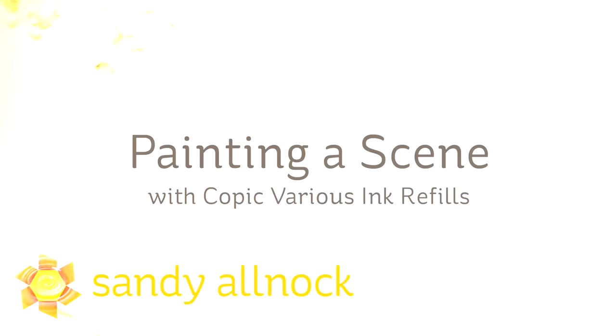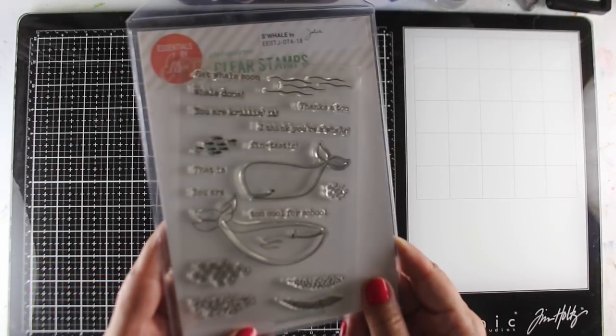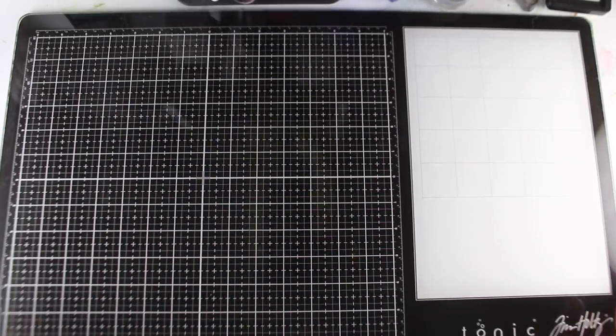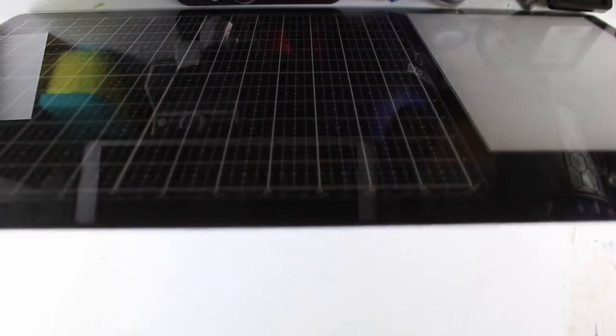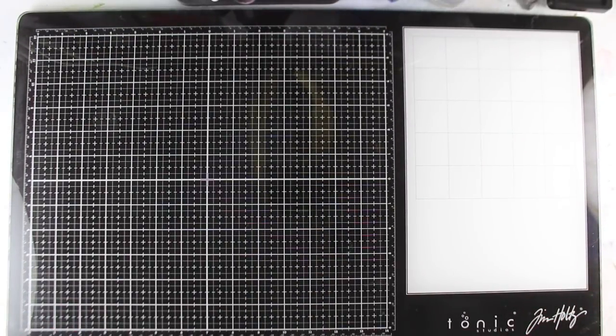Today I'm going to be painting a scene with Copic Various ink refill bottles. It's very similar to what you can do with alcohol inks. I'm going to be using Swale by Ellen Hutson, and I'm also using my Tonic glass mat. I thought I'd lift it up and show you. It's quite heavy, but it's pretty nice. I seem to like it.